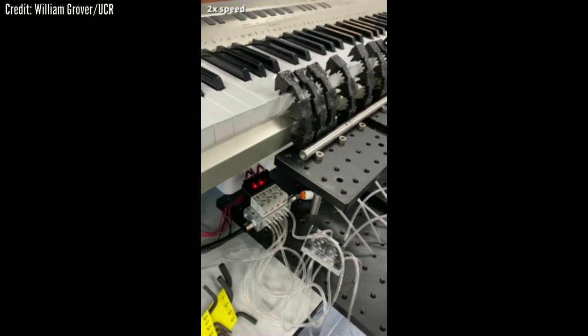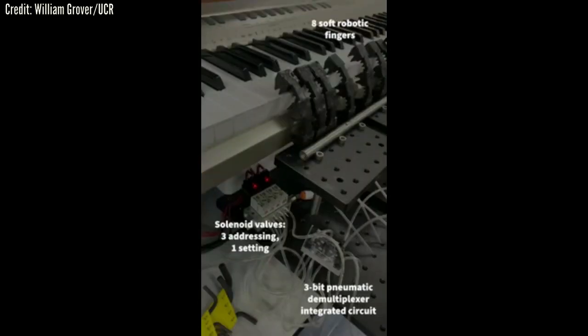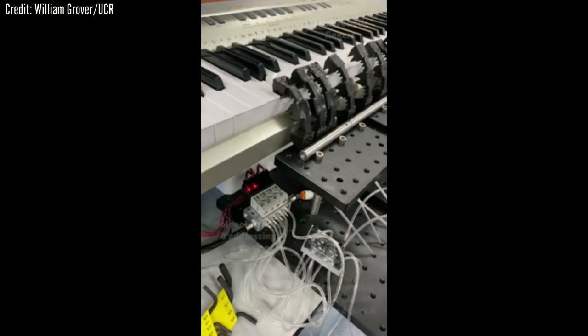The pneumatic RAM uses atmospheric pressure air to represent a zero or false value, and vacuum to represent a one or true value. The soft robotic fingers are extended when connected to atmospheric pressure and contracted when connected to vacuum. By varying the combinations of atmospheric pressure and vacuum within the channels on the RAM chip, the researchers were able to make the robot play notes, chords, and even a whole song on a piano.